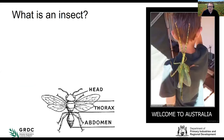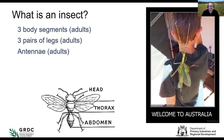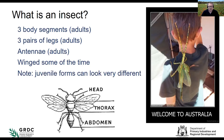Starting with the basics: what is an insect? Adults have three body segments, three pairs of legs, antennae, and are winged some of the time. Juvenile forms can look very different from adults. Insects form the bulk of our pests, but not all invertebrates are insects — it's a classification system that allows us to identify them properly.